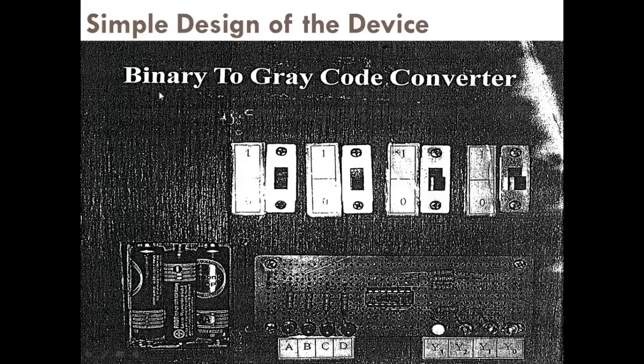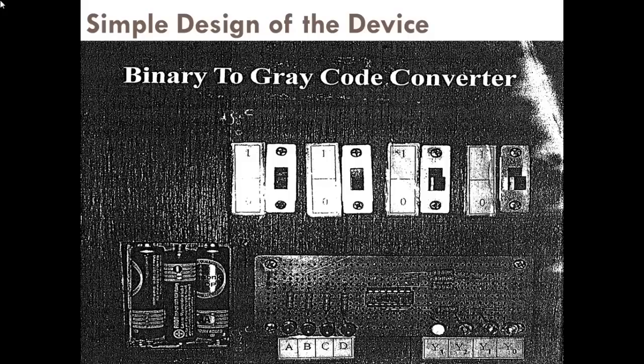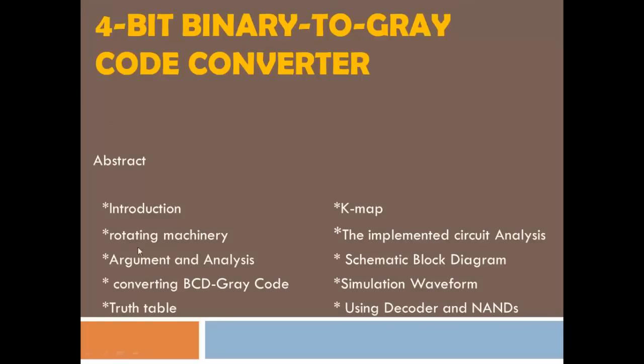The gray code has the property of variations one bit from one word to another. The gray code is very useful in determining the angular positions of a rotational machinery shaft. Constructing the device is based on finding the truth table and the K-map and extracting the logic expression from the K-map. The logic circuit can be implemented using two ways.